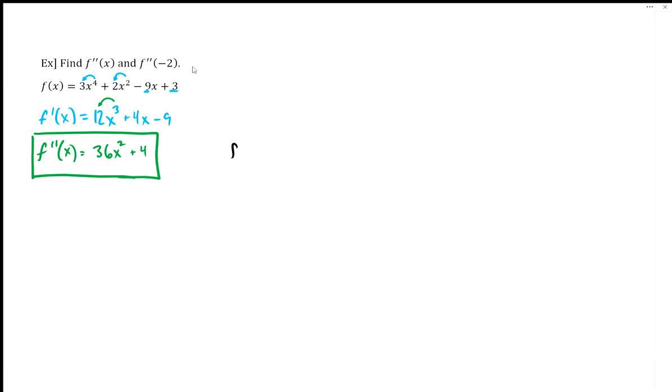Now I'm just rewriting it so I can see it all by itself for the next step. So now we're going to do f double prime of negative 2. So f double prime of negative 2 is equal to 36. And then what we're doing is just changing those x's to be parentheses with negative 2, just like that.